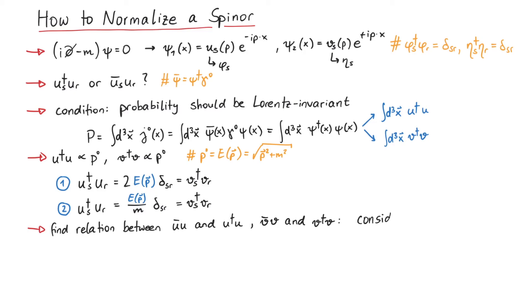Let's consider the expression u bar gamma mu u. This transforms like a Lorentz vector, so it must be proportional to the momentum, since we don't have any other four-vector inside u. We will now modify this equation in two ways.